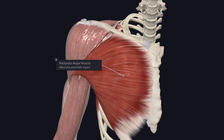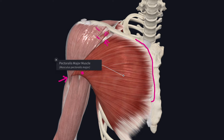Next, we will study about the pectoralis major muscle. It is a thick triangular muscle, broad at its sternoclavicular origin and narrow at its insertion to the humerus. It forms the anterior wall of the axilla. The upper border of the muscle is separated from the anterior border of the deltoid by a small triangle known as the infraclavicular triangle.